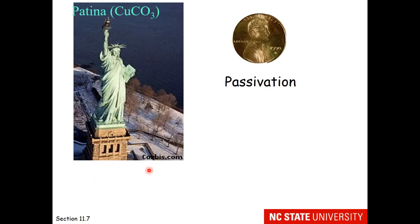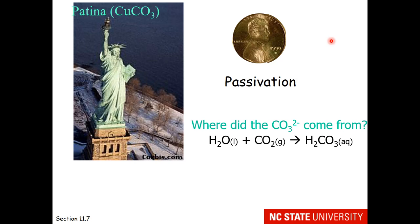Here's another example of passivation. I'm sure you know that copper in its elemental state has this orange color, like you would see on a penny. But the Statue of Liberty is made of copper, yet she appears green. This is because she has a passivating coating or patina of copper 2 carbonate. You may be asking, how does that form? Where did that carbonate come from? Well, if you're outside, you have water and carbon dioxide. These make carbonic acid.